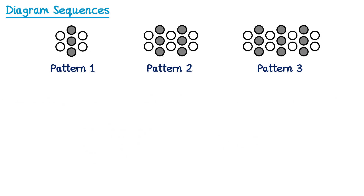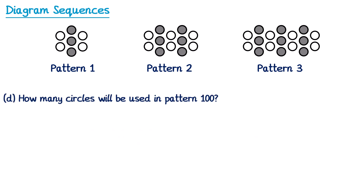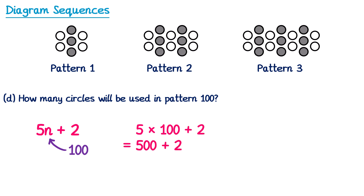For part d: how many circles will be used in pattern 100? We have the nth term for the number of circles, which was 5n plus 2. To work out the number of circles in pattern 100 we substitute n for 100. So we need 5 multiplied by 100 plus 2. 5 multiplied by 100 is 500, so we have 500 plus 2, which is 502.